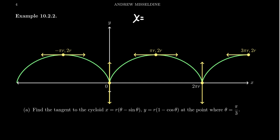We saw previously that we can parameterize the cycloid using the equations x equals r times theta minus sine theta, and y equals r times 1 minus cosine theta. So theta is our parameter here in play.